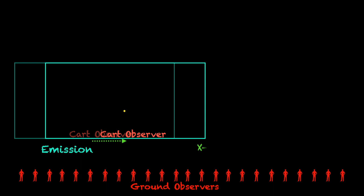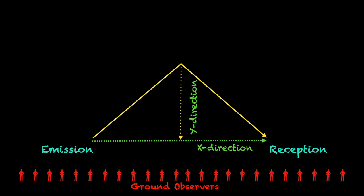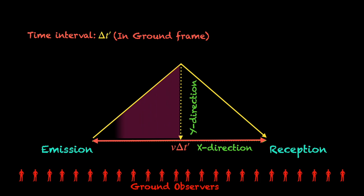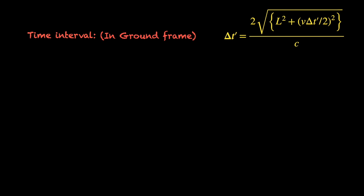Now, the observers on ground also witness the emission and reception events, but unlike the cart observer, they can see the cart move in the x direction in the meantime. So, they naturally claim that the photon is moving up and down as well as sideways, covering a longer distance. In fact, assuming an unknown time interval delta t prime between the emission and reception events, the ground observers can apply Pythagoras theorem to calculate the total distance covered by the photon. Then, they can divide the distance covered by the photon speed c to set up an equation for computing the ground frame time interval delta t prime.